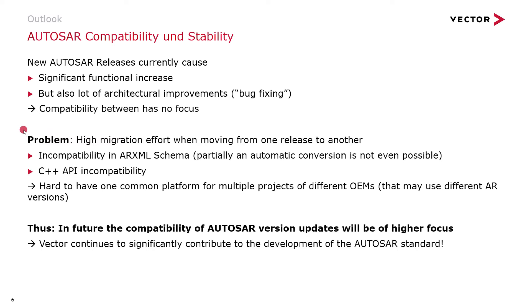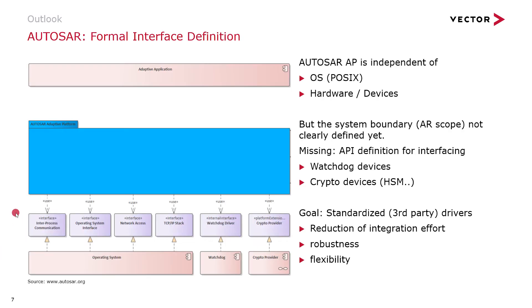The problem is that we have high migration efforts — first on our side, because we have to develop new basic software every time, but also on the customer side, who have to adapt to the new ARXML schema or to the new C++ API. This makes it hard to have a common platform serving multiple OEM projects when those OEMs use different AUTOSAR versions. We hope that in future, AUTOSAR will ensure more compatibility between different versions, and as Vector we are pushing AUTOSAR in this direction.